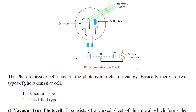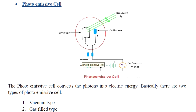The first classification is the photoemissive cell. The photoemissive cell converts photons into electrical energy. There are basically two types of photoemissive cells.